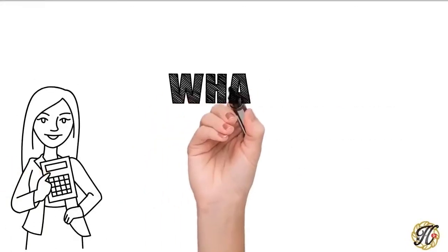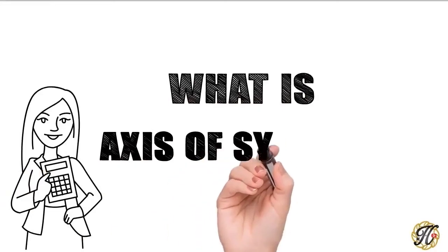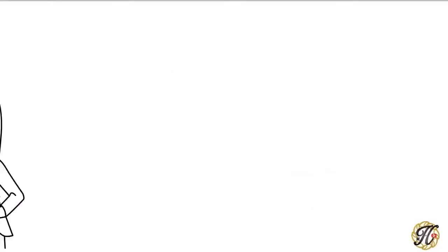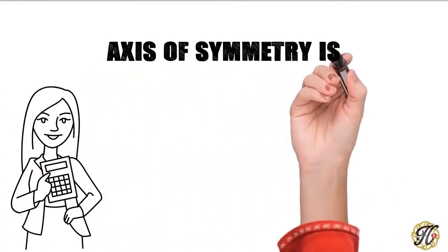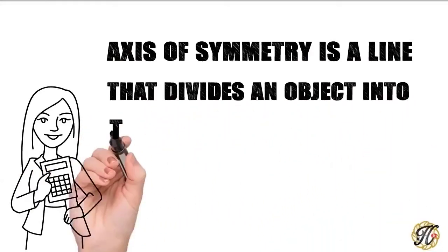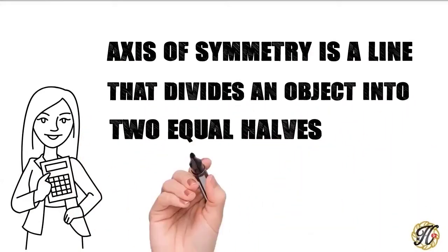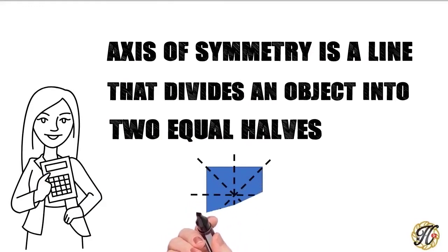What is Axis of Symmetry? Axis of Symmetry is a line that divides an object into two equal halves, thereby creating a mirror-like reflection of either side of the object.